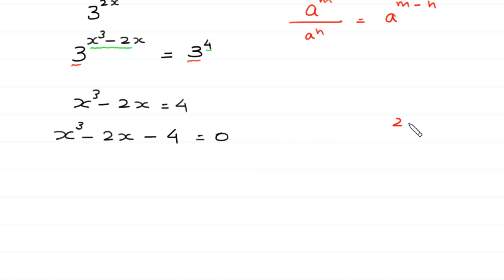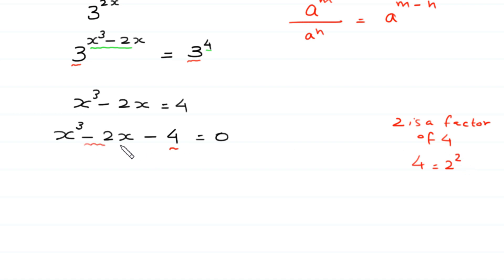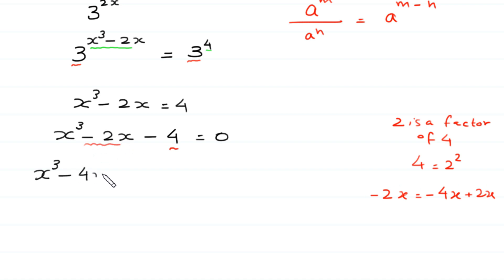Since 2 is a factor of 4, and 4 is equal to 2 squared, we split this negative 2x as negative 4x plus 2x. We write x cubed, then split negative 2x as negative 4x plus 2x, and finally write negative 4, equal to 0.